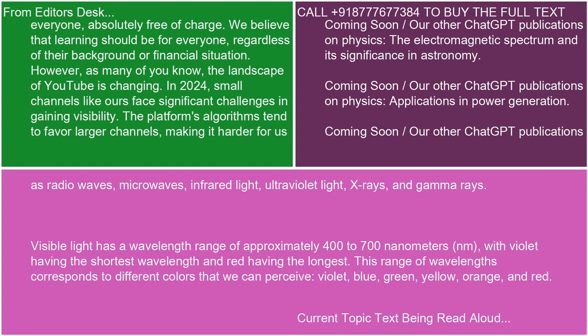Visible light has a wavelength range of approximately 400 to 700 nanometers (nm), with violet having the shortest wavelength and red having the longest. This range of wavelengths corresponds to different colors that we can perceive: violet, blue, green, yellow, orange, and red.